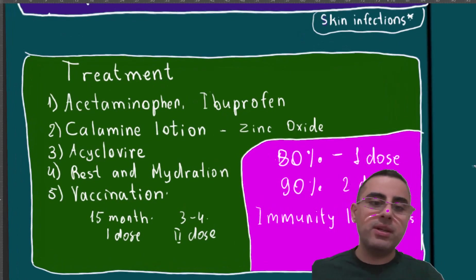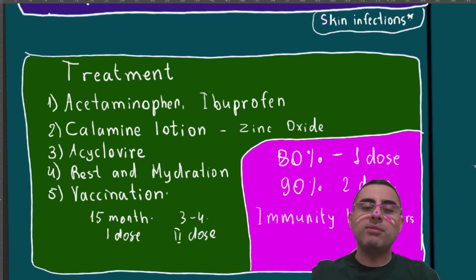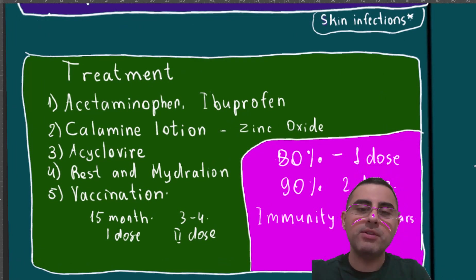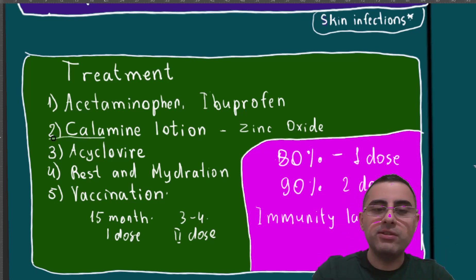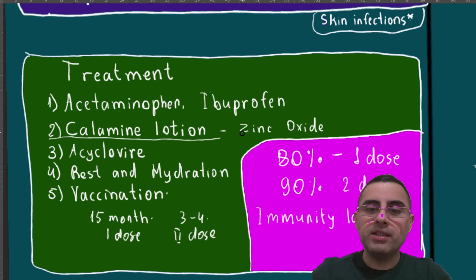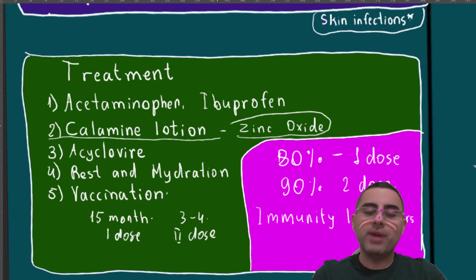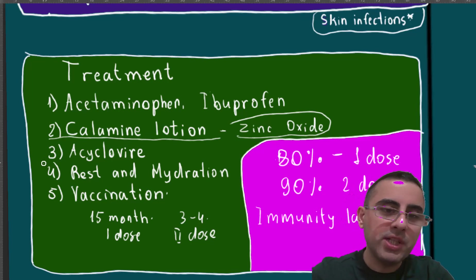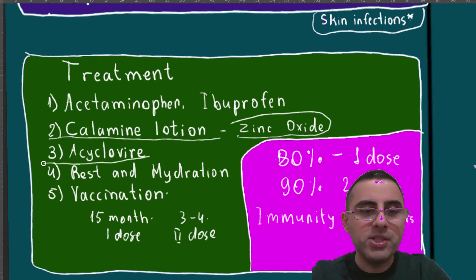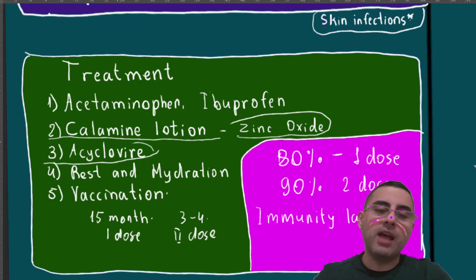There is no direct cure for chickenpox. Symptoms are managed with acetaminophen and ibuprofen. Calamine lotion is commonly applied to the skin — it contains zinc oxide, which dries the skin and speeds up recovery. In immunocompromised patients, the antiviral drug aciclovir is sometimes used.